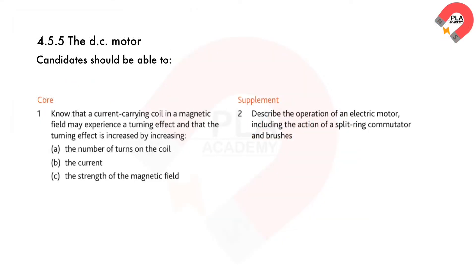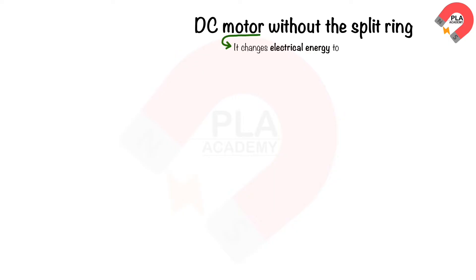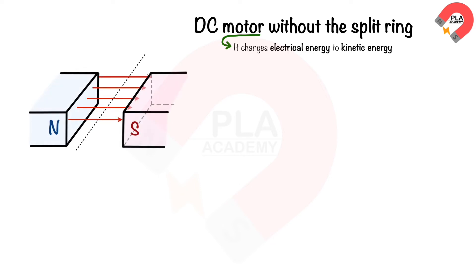Candidates are expected to have a thorough understanding of the syllabus details. The DC motor without the split ring commutator is the device which changes electrical energy to kinetic energy. The simple DC motor consists of a coil of wire which is free to rotate, positioned in a uniform magnetic field.